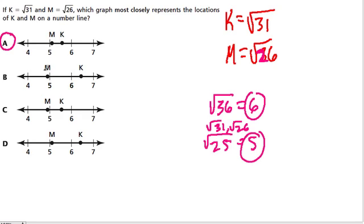Here, m is below 5. How could that be? If the square root of 25 is 5, and that's right here, how could the square root of 26, which is bigger than 25, be less than 5? It doesn't work.